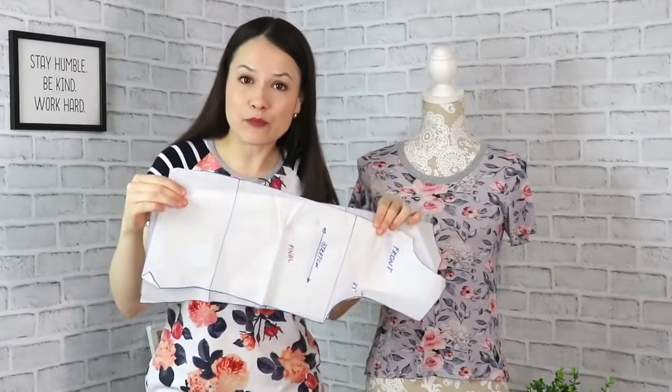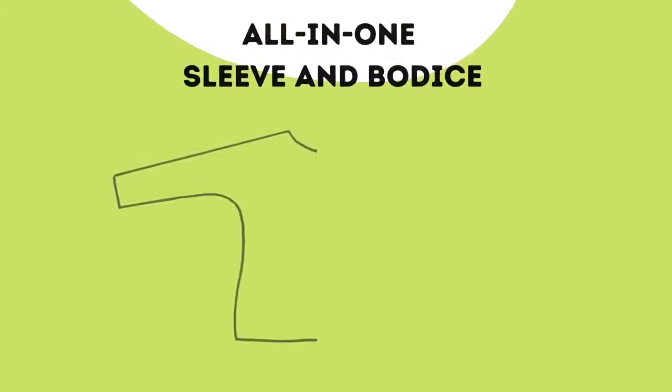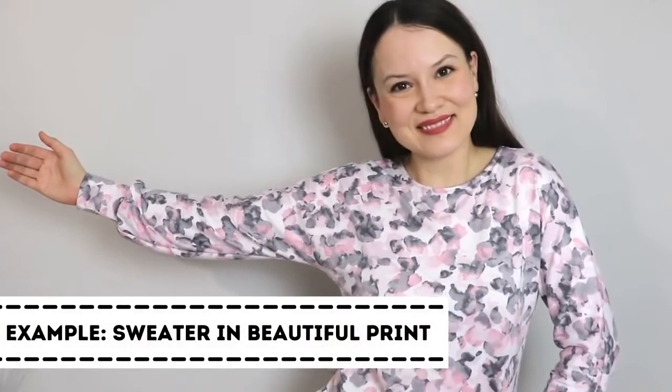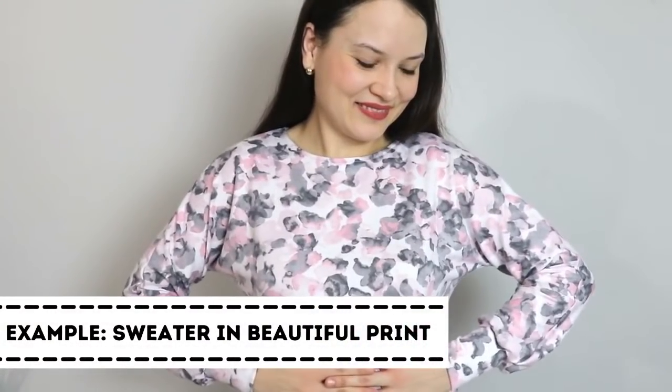And today we will be transforming the simple knit bodice block into a grown-on sleeve top that only has two pattern pieces, the front and the back. This kind of top is very simple to make, very simple to sew.